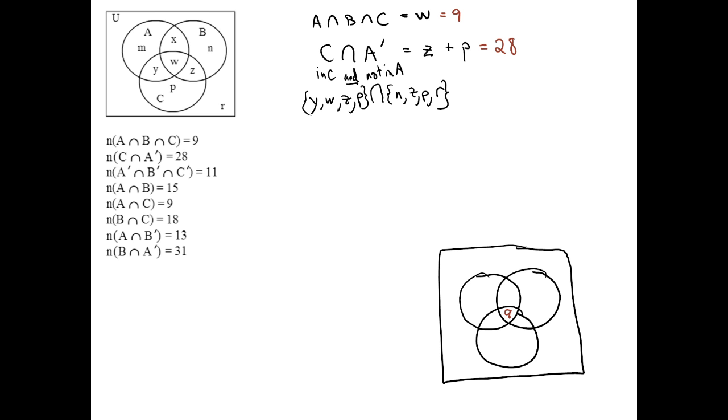Now, that's not any region itself directly. We can't put 28 anywhere directly into the drawing. Just the fact that when we take Z and P and add them together, we should get 28.